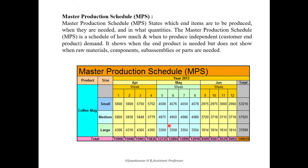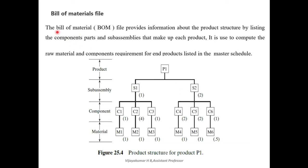The bill of material file provides information about the product structure by listing the components, parts, and sub-assemblies that make up each product. It is used to compute the raw material and component requirements for end products listed in the master production schedule. For example, in the BOM for product P1, there are two sub-assemblies: S1 (quantity one) and S2 (quantity two).